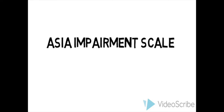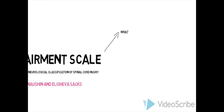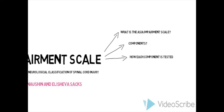In this video, we will be talking about the ASIA Impairment Scale, otherwise known as the International Standards for Neurological Classification of Spinal Cord Injury. We will be focusing on what exactly the scale is, the components it's made up of, how each component is tested, and how spinal cord injury is classified.